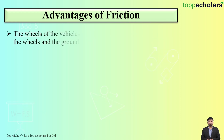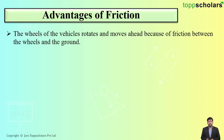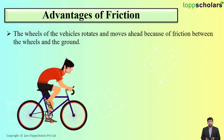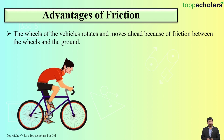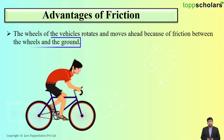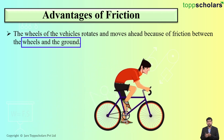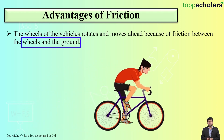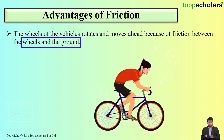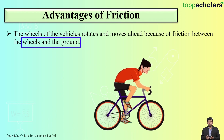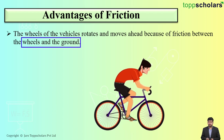Another advantage of friction is that the wheels of a vehicle rotate and move ahead. For example, if I'm considering this bicycle, this bicycle is able to move ahead. The reason behind that is there is friction between the wheels and the ground.